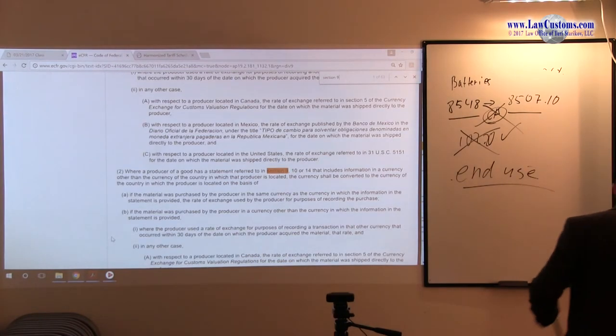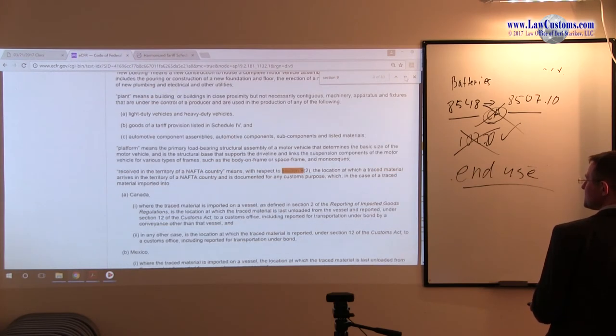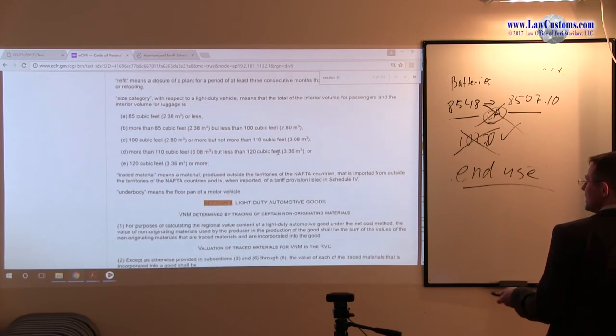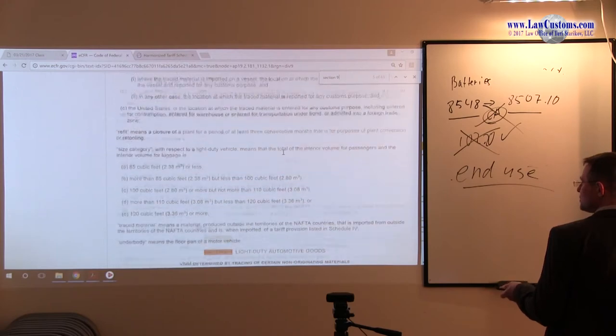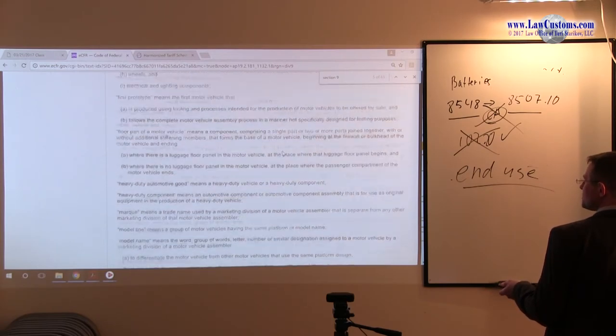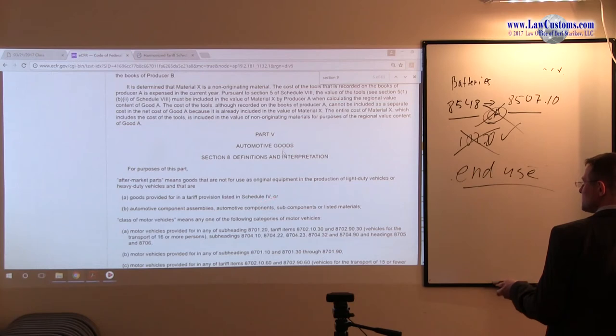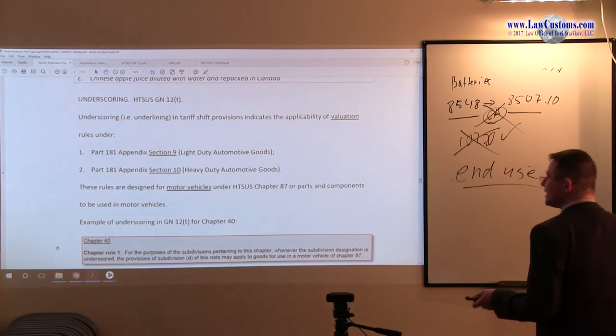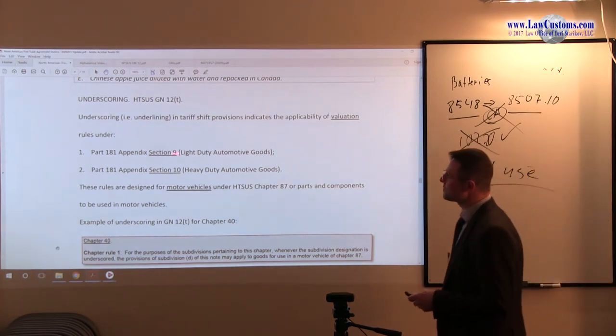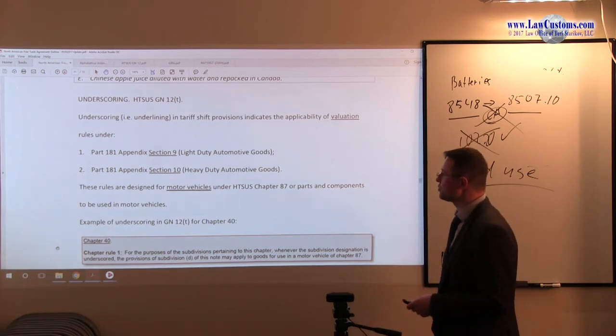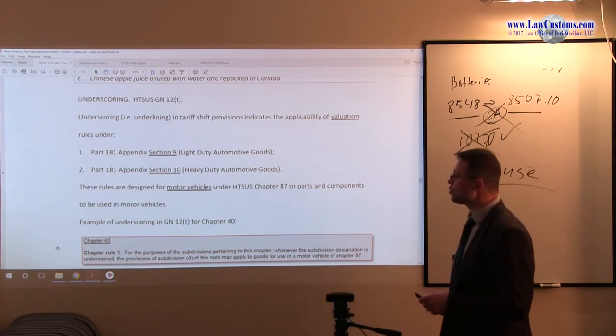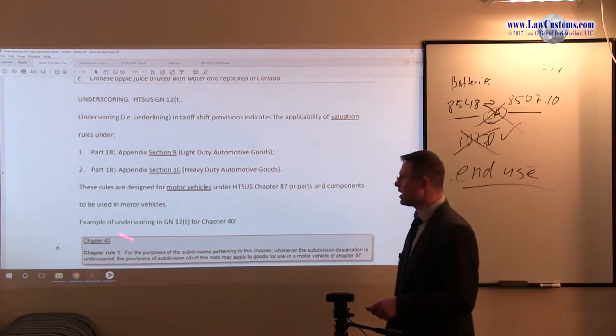If you look at Section 8 and 9, it's quite a voluminous appendix. Section 9 talks about light duty automotive goods, so like regular road passenger cars. And it talks about automotive goods in general, definitions and interpretations. What I suggest to get out of this appendix is to know that you have Section 9 and Section 8 that deals with automotive products. You also know that motor vehicles are covered under Chapter 98.